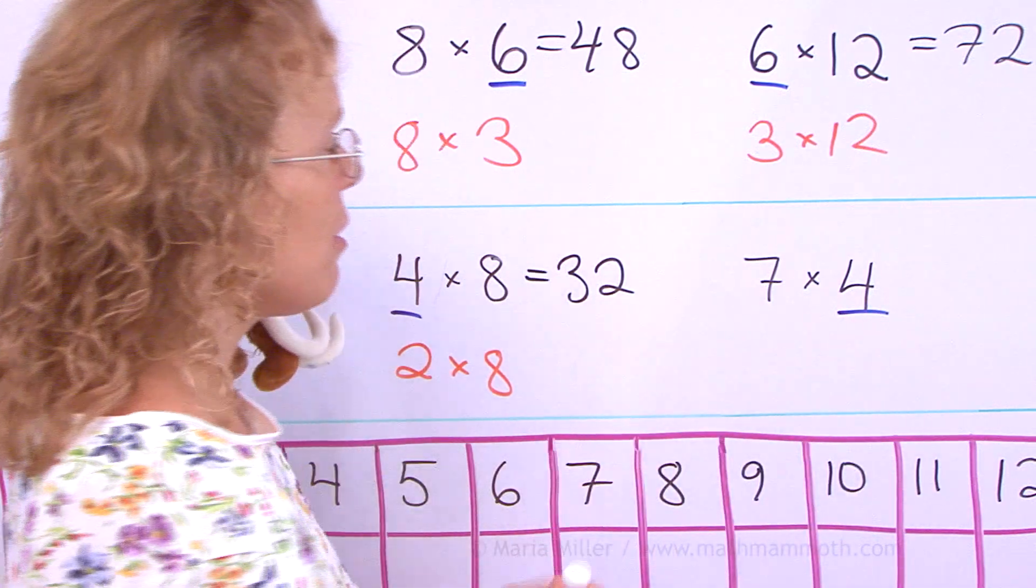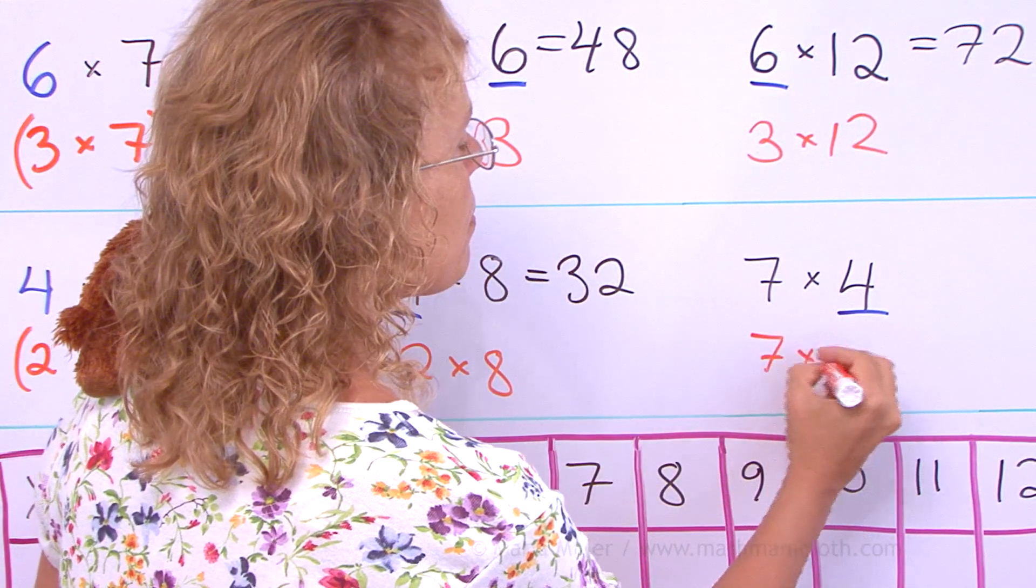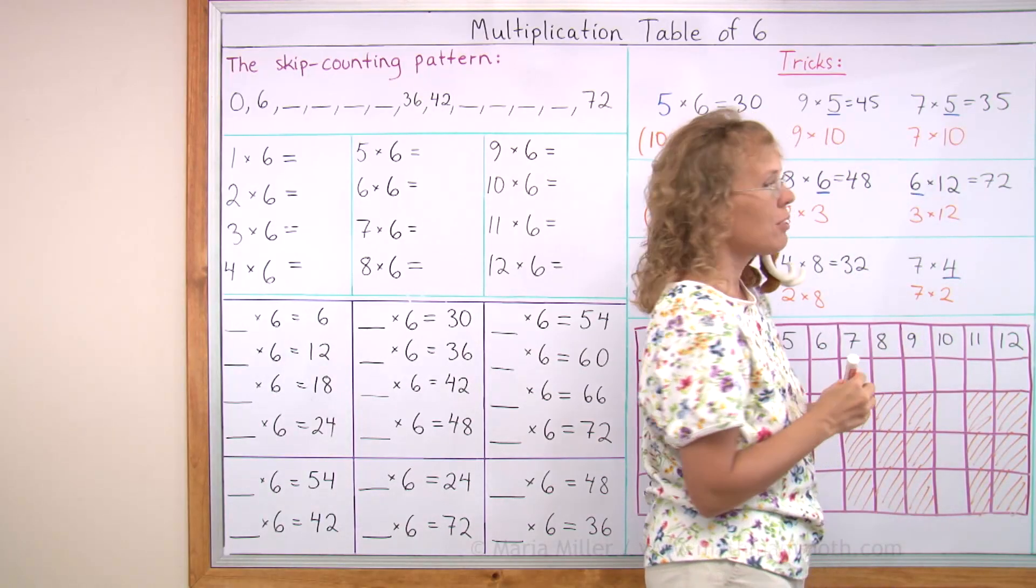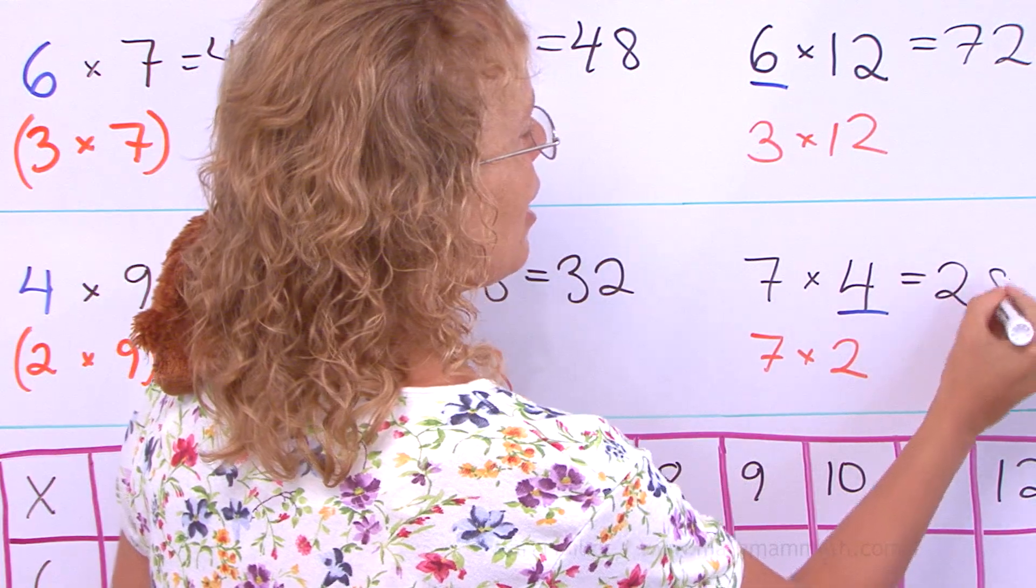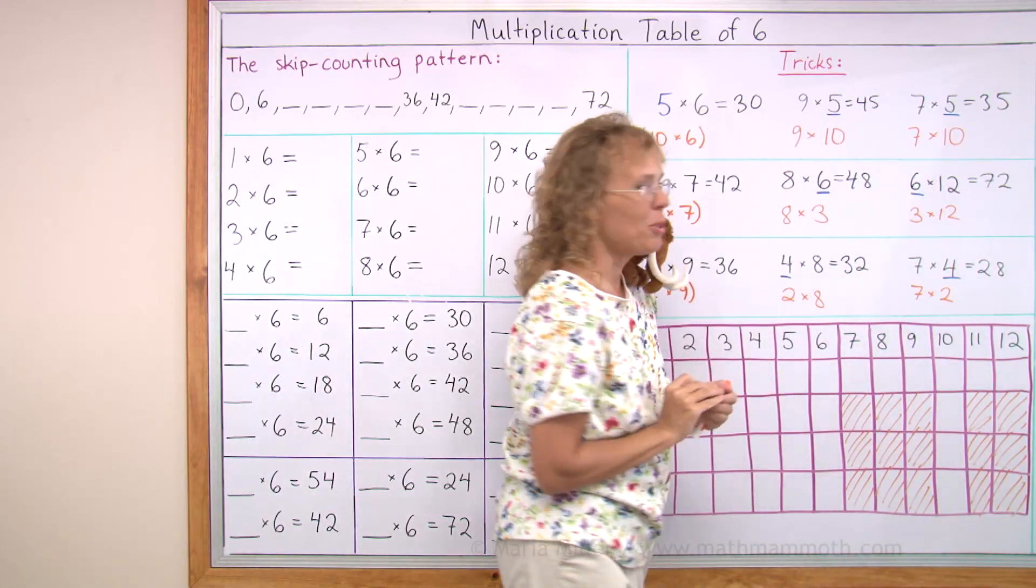7 times 4. Instead of 4, use 2. 7 times 2 is 14. Double that, 28. I hope these little tricks will help you also.